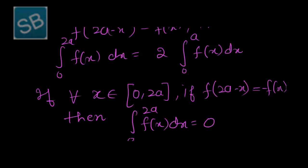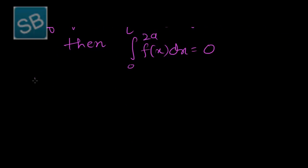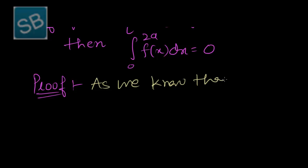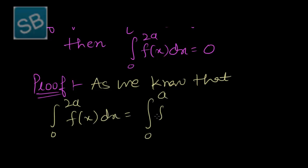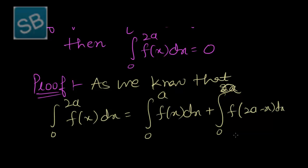We will derive this corollary using the result of theorem 3.3. As we know from theorem 3.3, the integral from 0 to 2a of f(x) dx equals the integral from 0 to a of f(x) dx plus the integral from 0 to a of f(2a minus x) dx.